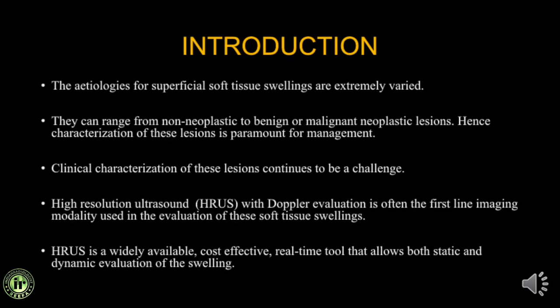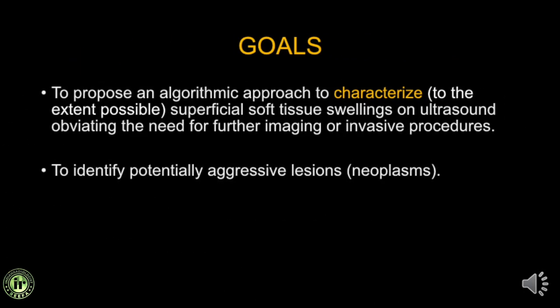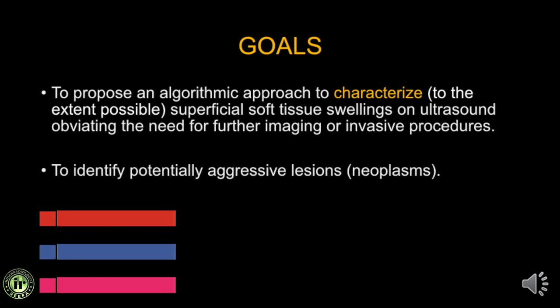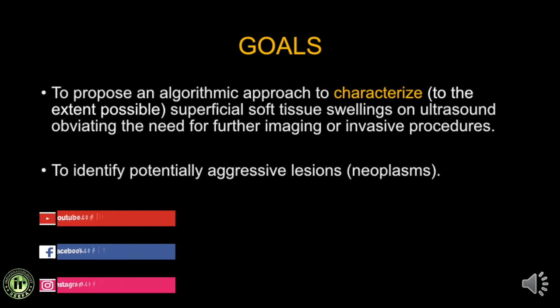The etiologies of superficial soft tissue swellings are extremely varied. They can range from non-neoplastic to benign or malignant neoplastic conditions. Clinical characterization of these lesions continues to be a challenge. High resolution ultrasound with access to Doppler evaluation is often the first-line screening modality used to evaluate these soft tissue swellings. It is widely available, cost-effective, and a real-time tool which allows for both static and dynamic evaluation. In the next 10 minutes, I would like to propose an algorithmic approach to characterize some of these soft tissue swellings commonly encountered in day-to-day practice.